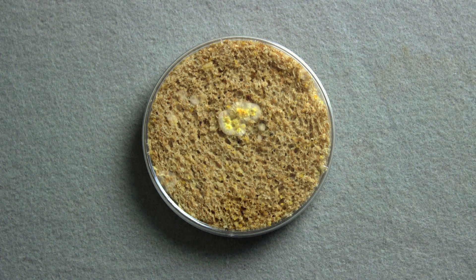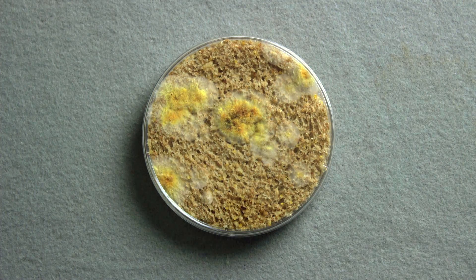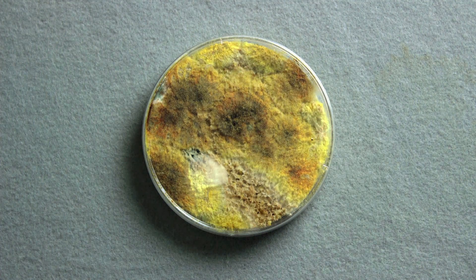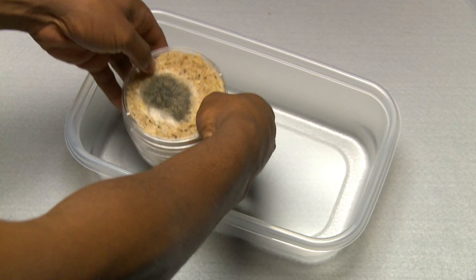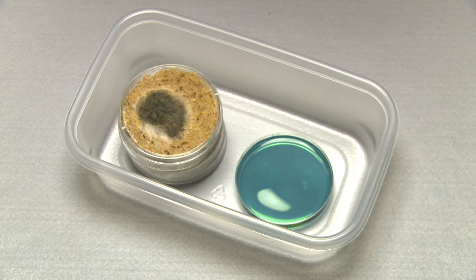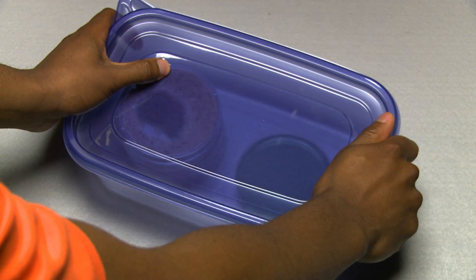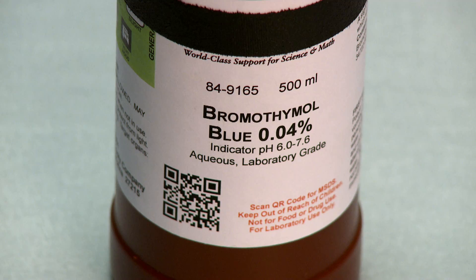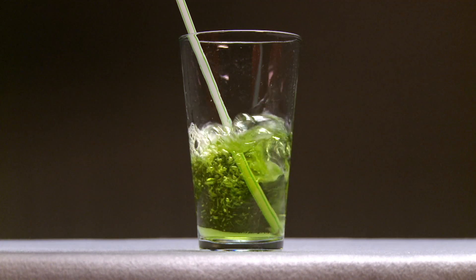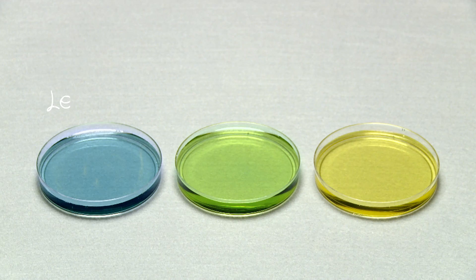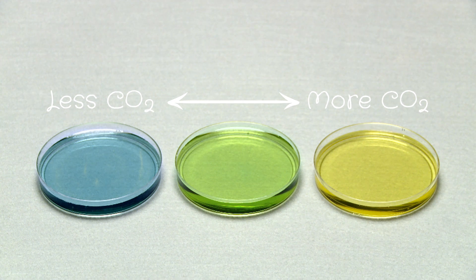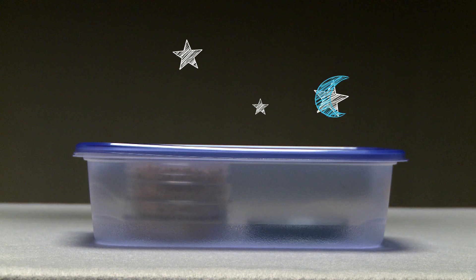Then we waited for the bread to mold — it took about a week. This bread's looking nice and gross! Now we put a dish of blue BtB in the chamber along with the bread, and then put the lid on. We want to find out if the concentration of CO2 will change. BtB is bromothymol blue. BtB changes color when carbon dioxide is added, like when you blow bubbles into it. We can use BtB to see if carbon dioxide concentrations increase in the air. After one night, we'll check the color of the BtB again.